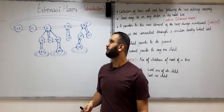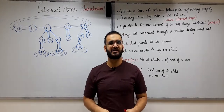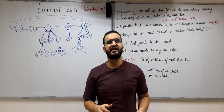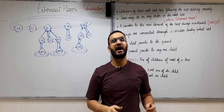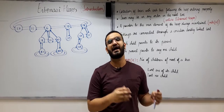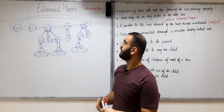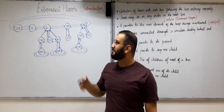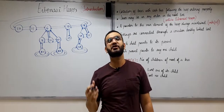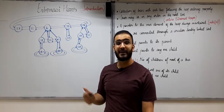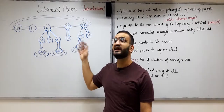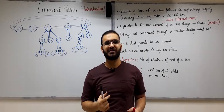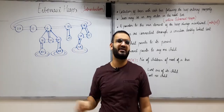Hi guys, in this video we are going to start a new advanced data structure: Fibonacci heaps. In this playlist of advanced data structures, until now I have taught you binomial heaps and leftist heaps. So now this is going to be the third advanced data structure that is also a heap. Many people consider this a very complex data structure, but in my opinion this is the least complex data structure. By the end of this video you will be convinced by my statement.